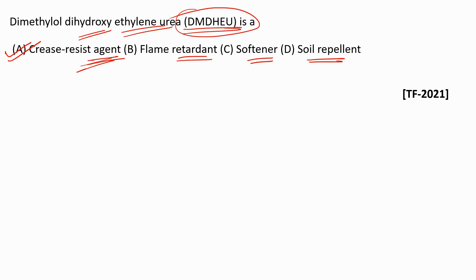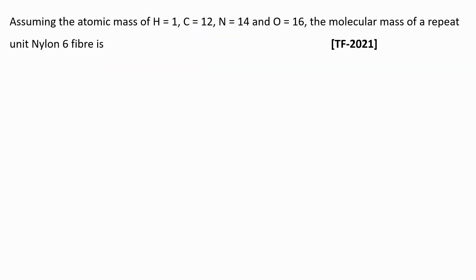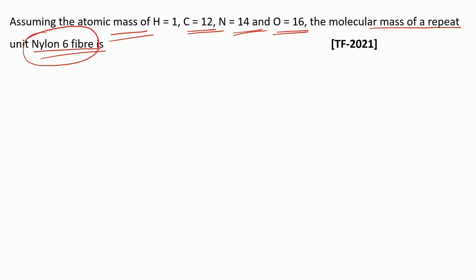Now the next question — a one-mark NAT type question. Assuming atomic masses: hydrogen = 1, carbon = 12, nitrogen = 14, oxygen = 16, find the molecular mass of a repeat unit of nylon 6 fiber. These one-mark numerical questions in GATE Textiles are comparatively simple, straightforward, and formula-based, so you just need to be clear with the basics to answer them easily.